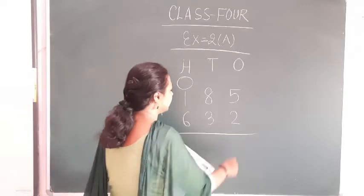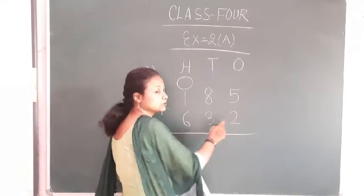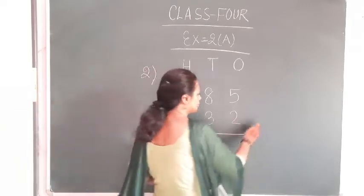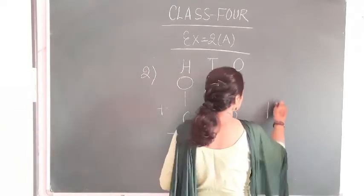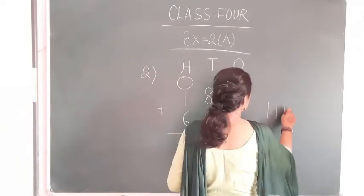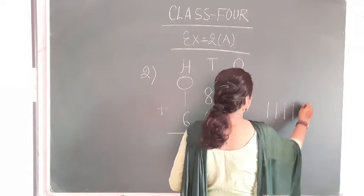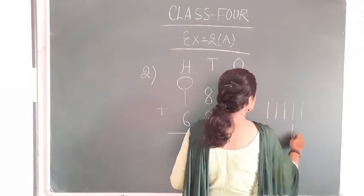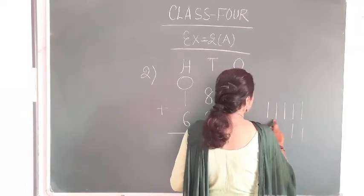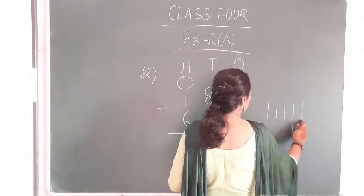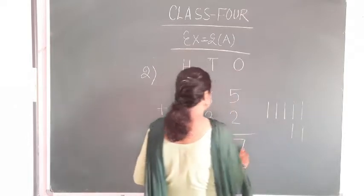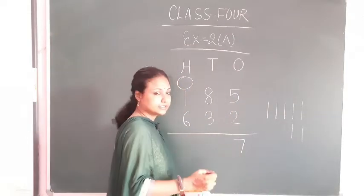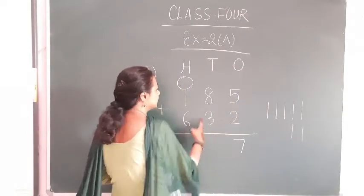Then 5 plus 2. Drawing 5 lines: 1, 2, 3, 4, 5. And plus 2: 1, 2, 3, 4, 5, 6 and 7. This is 7.